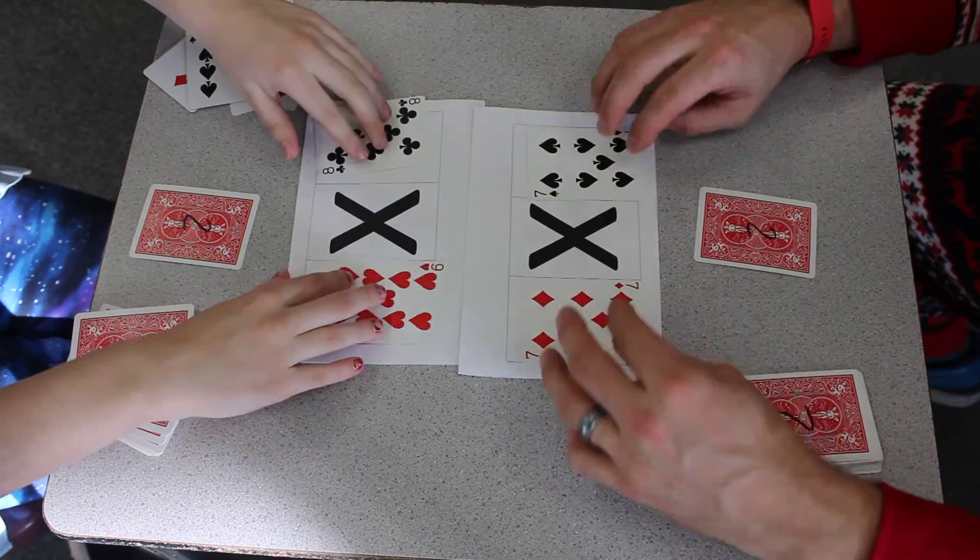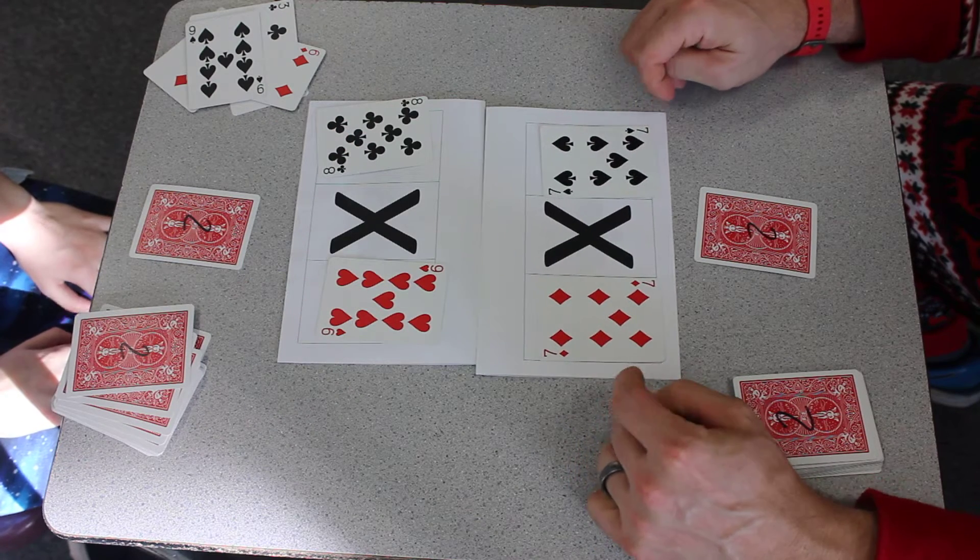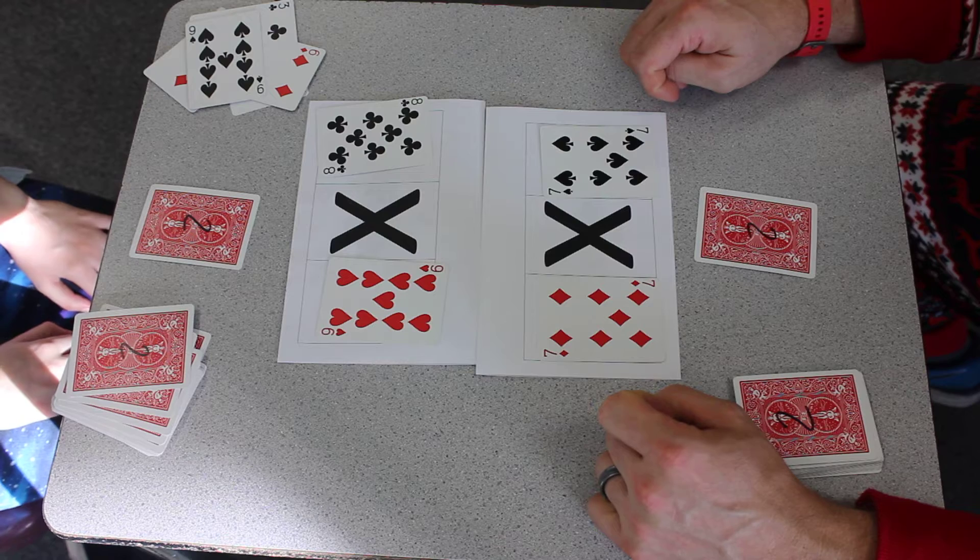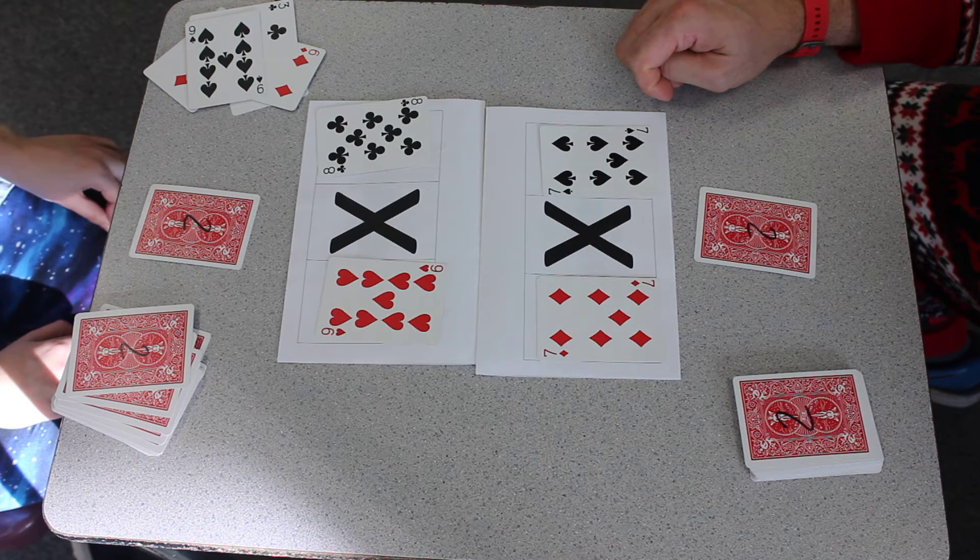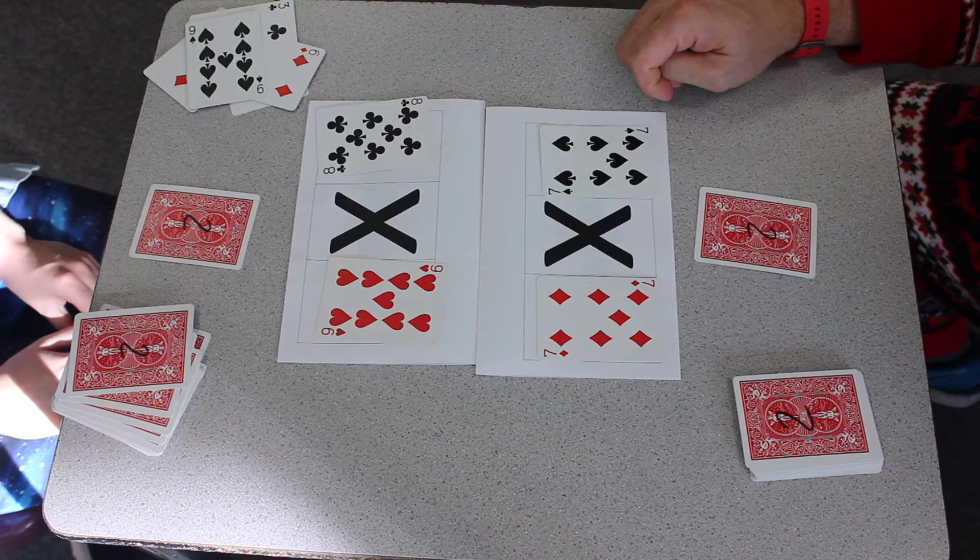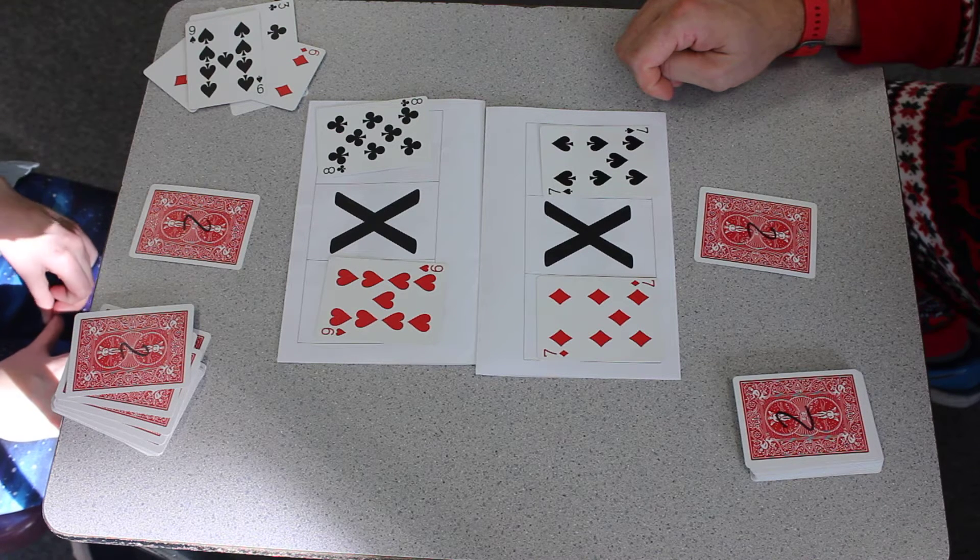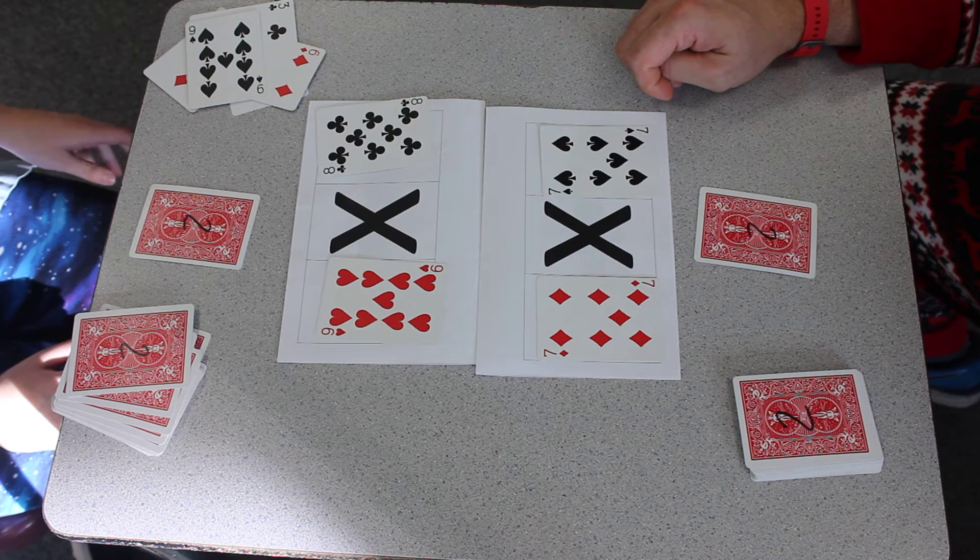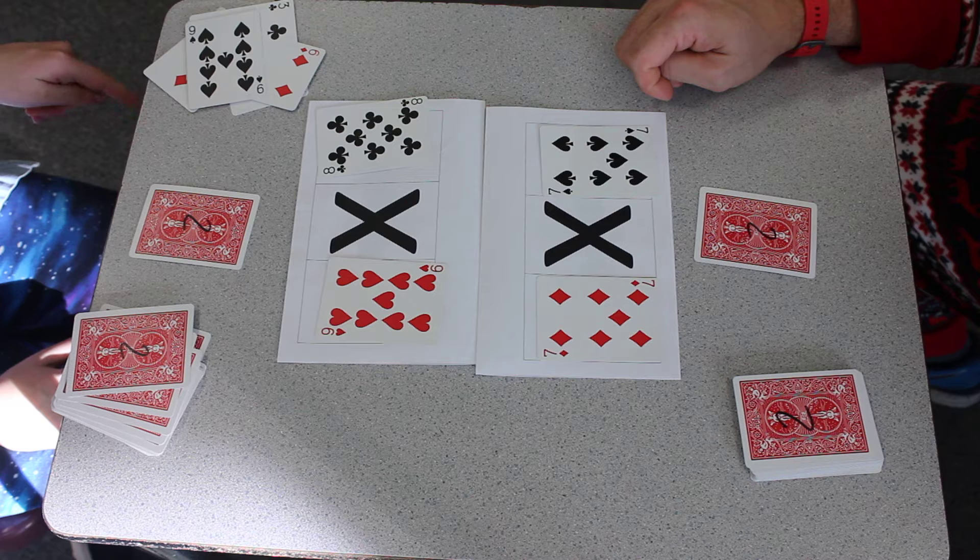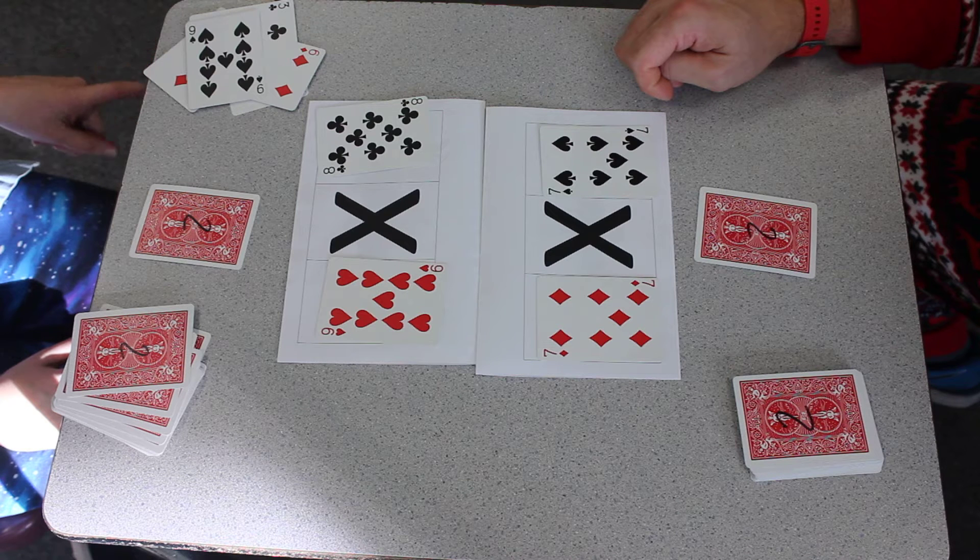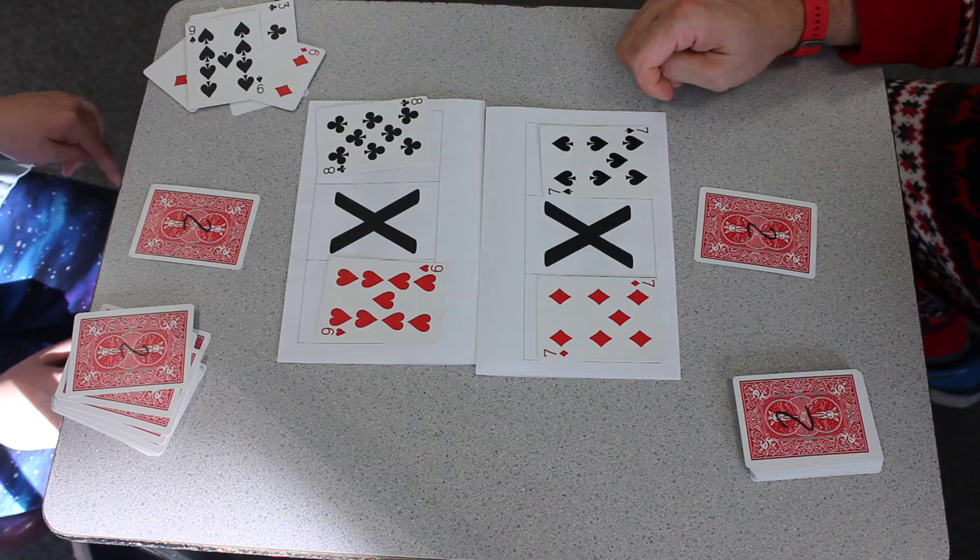Turn over a two. Oh, seven times seven is 49. What do you have? I have eight times nine. I could go eight times eight is 64.